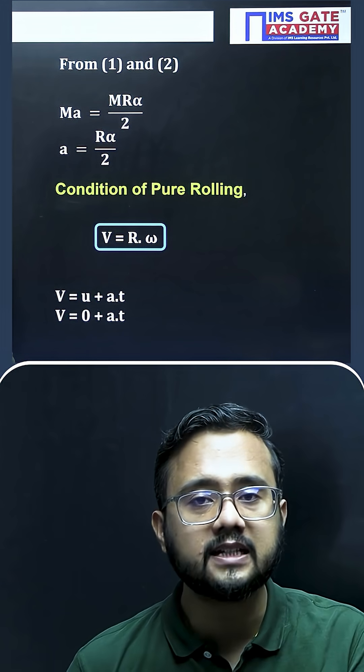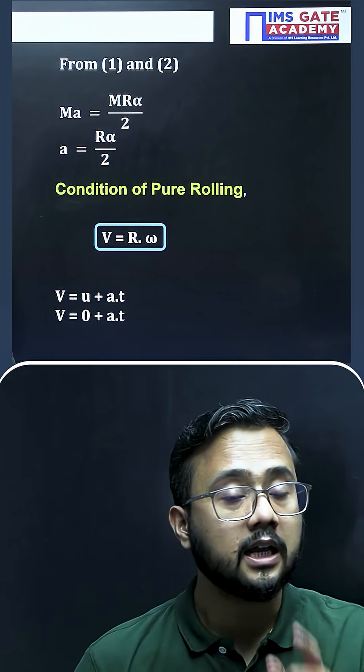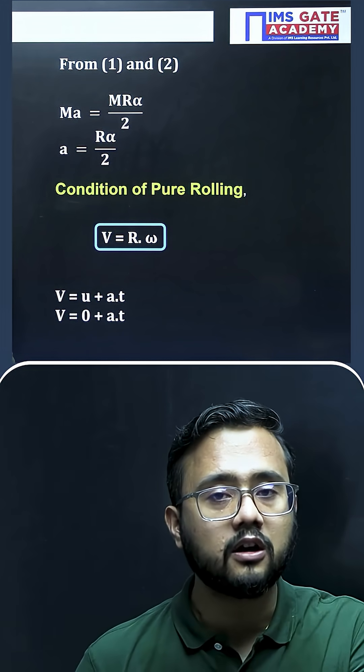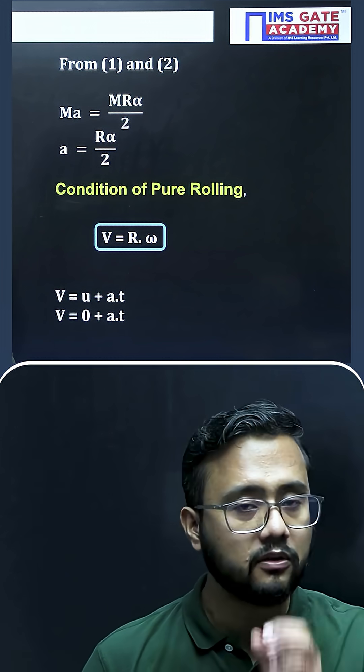If I talk about linear velocity, as there is no initial velocity given, we will write u equals to zero here. Now if I talk about omega, which is omega naught plus alpha t, but alpha will be keeping negative here, right? So this is very important to understand.